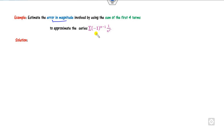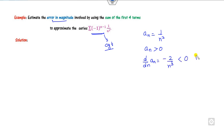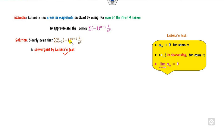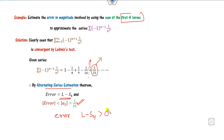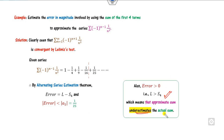Look at one more example. Find the error for this alternating series. Firstly, prove it is convergent. Here a_n is 1/n². We can see a_n is greater than 0, its derivative is -2/n³ which is less than 0 for all n in the natural numbers, and the limit of a_n as n approaches infinity is 0. All three conditions are satisfied, so the series is convergent by the Leibniz test. Expanding the series and considering four terms, the first unused term is 1/25. The error L minus S_4 is less than 1/25, the nature is positive, meaning S_4 underestimates the actual sum.